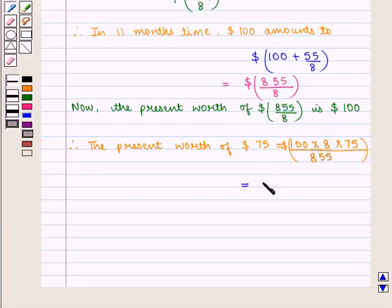This is equal to 100 × 8 × 5, that is, 4000/57 dollars.